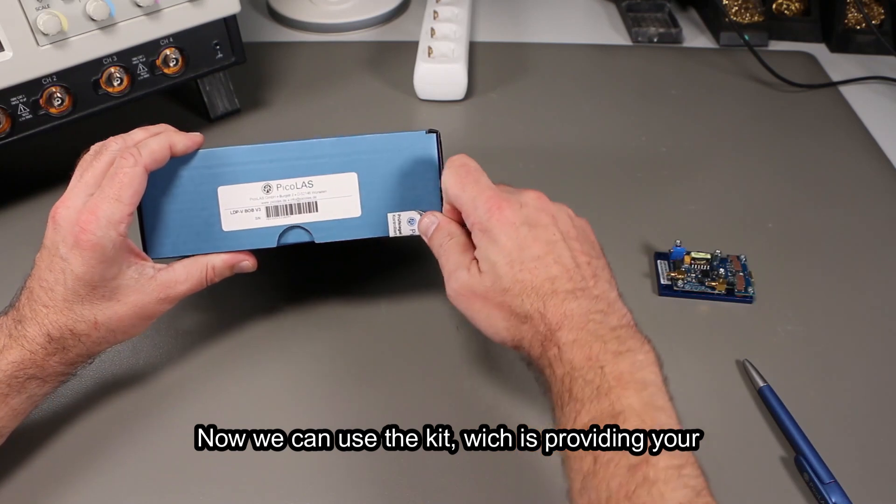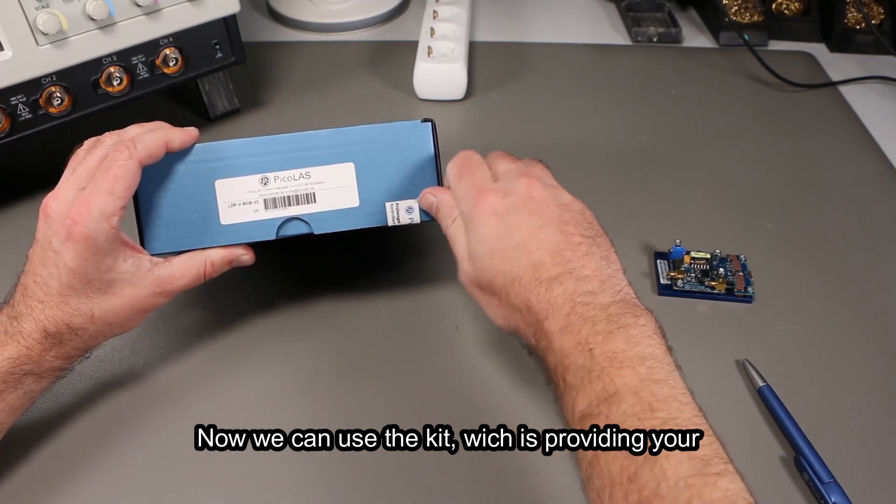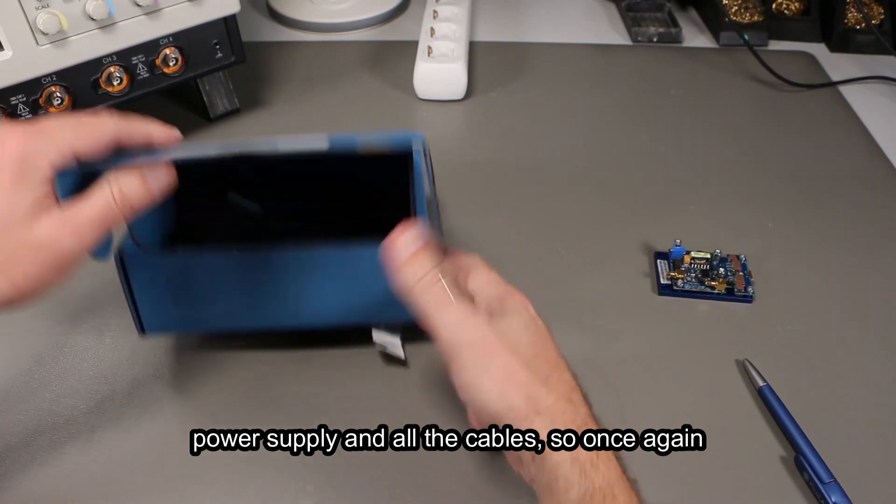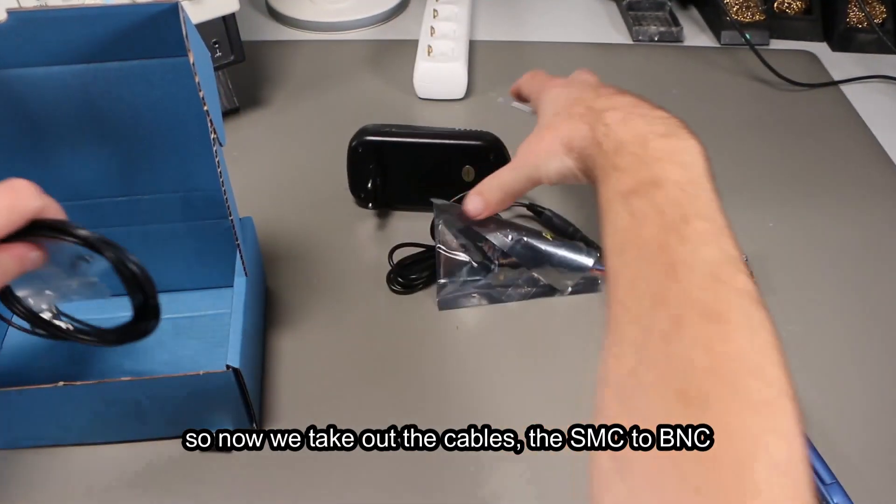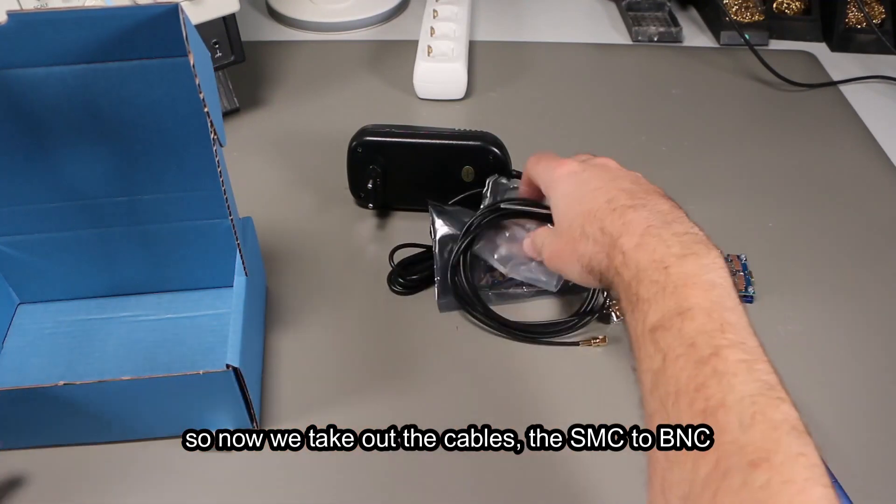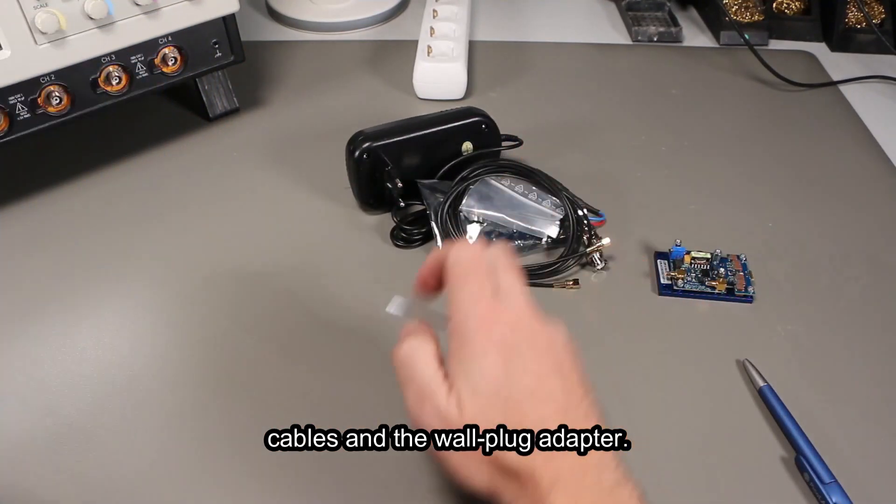Now we can use the kit which provides you a power supply and all the cables. So once again remove the seal, unpack all the devices, take out the cables, the SMC to BNC cables and the wall plug adapter.